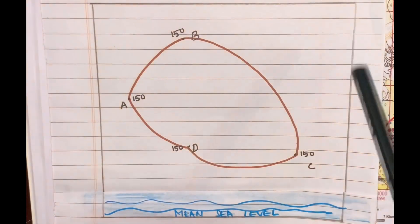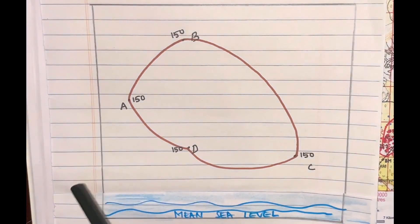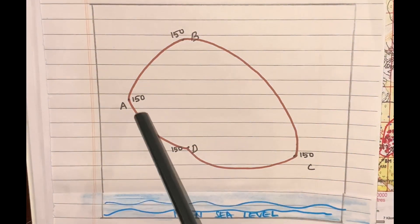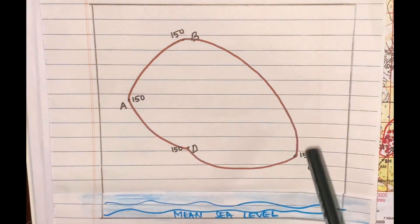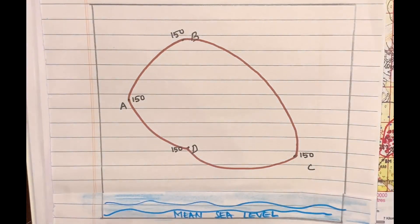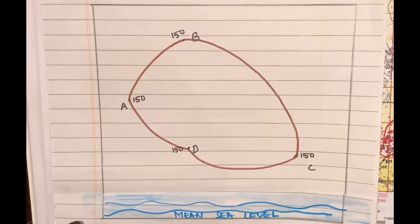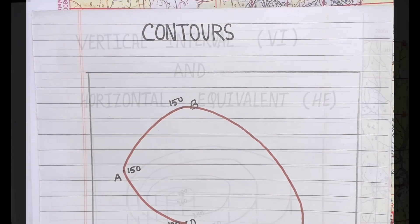A contour line is an imaginary line which joins all the places having same height from the mean sea level. This is the diagram which I have drawn for you. Four points are there indicating four places A, B, C and D, and I have written 150 beside all the points. It means all four places are 150 meters above the mean sea level. The contour line which joins all these four places is known as a contour line. This is an imaginary line.